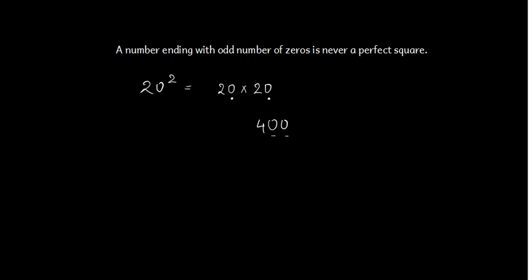Similarly, if suppose I am having 400, the square of 400 - 400 square will give us 400 into 400. Now these two zeros with both the fours will give us 1, 2, 3, 4 zeros and 16 over here.